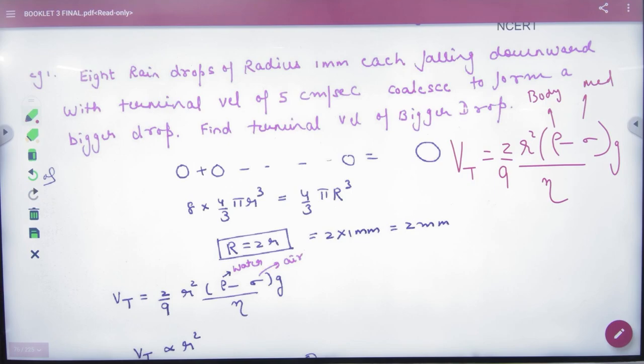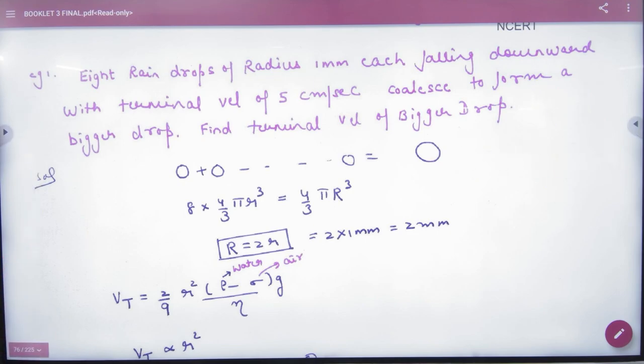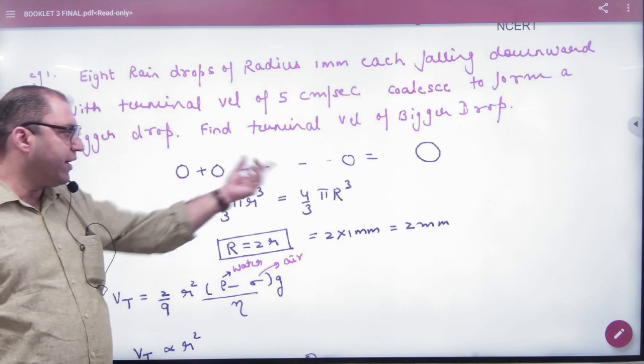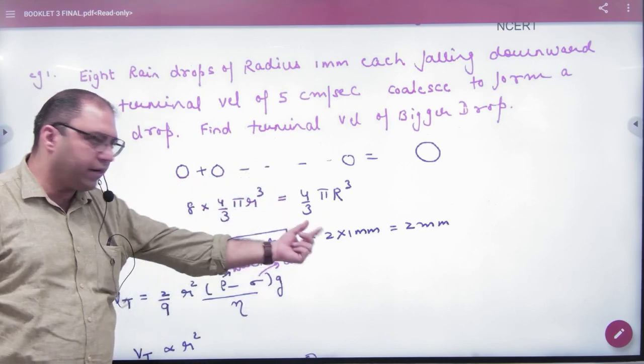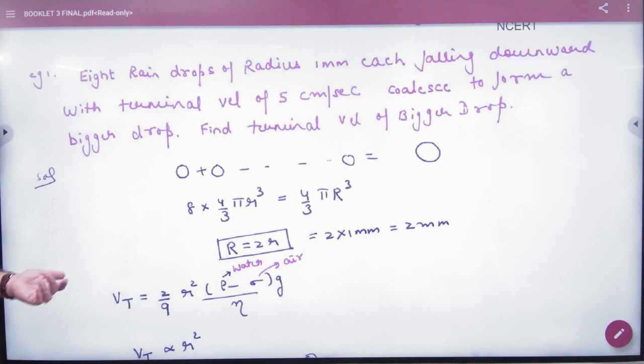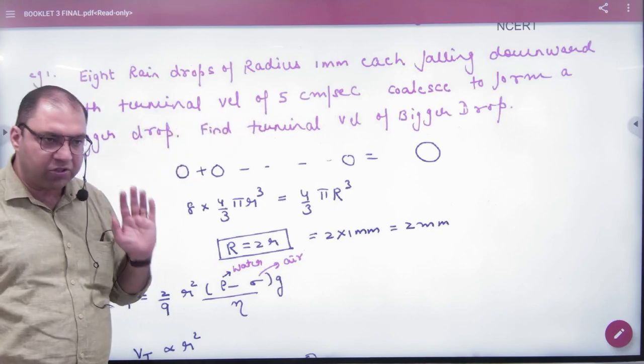There is one famous question from main exams. Eight rain drops combine to form one big drop. The small drops have radius r, and the big drop volume is equated from combining them. If a small drop falls with terminal velocity of 5, what will be the terminal velocity of the big drop?